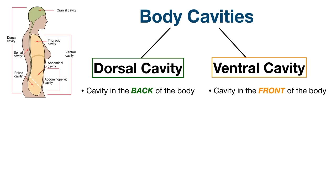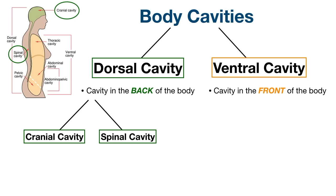Now that we have a good understanding of the dorsal and ventral cavities, each cavity can be broken down even more. Let's start with the dorsal cavity. The dorsal cavity can be subdivided into two main parts: the cranial cavity and the spinal cavity.